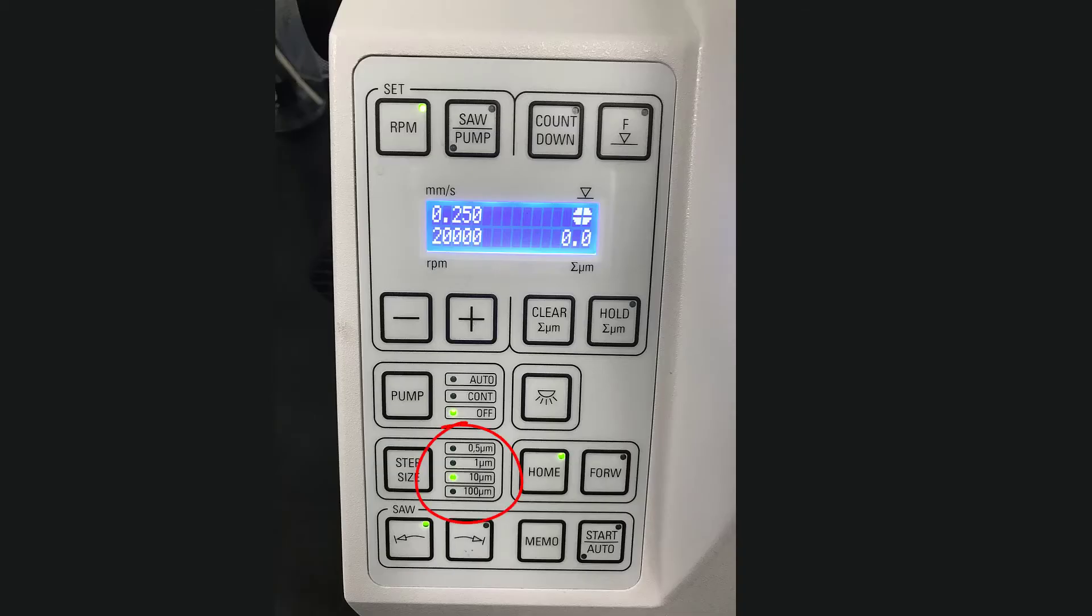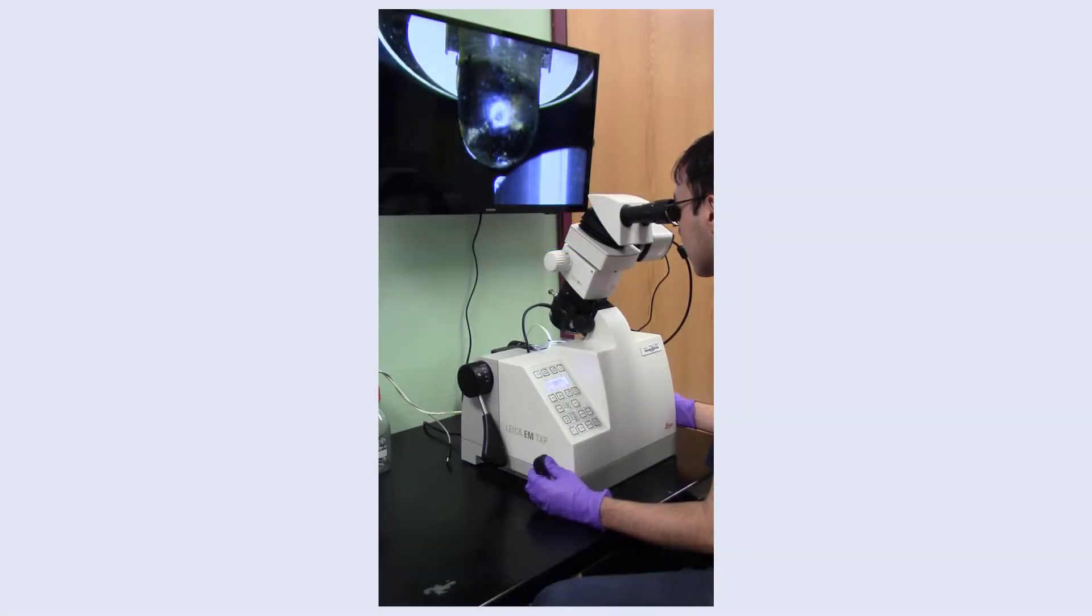Change your step size to 10 micrometers for a finer approach and, using the control lever, make a full pass at the sample by slowly lowering the control lever. Then advance using the feed wheel and repeat until you scratch the surface of the sample or feel a slight resistance by the control lever.